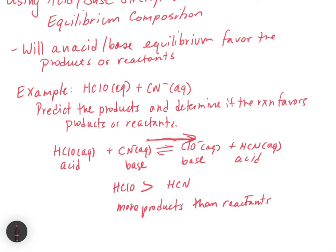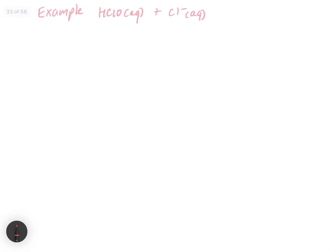That's how you can tell, first, what the products are going to be, and second, whether the reaction favors products or reactants at equilibrium. Now let's take a look at a second example, where we have HClO aqueous plus Cl⁻ aqueous. We go back to our chart to discover which is our strongest acid and which is our strongest base, and remember, we always have water present, so that's another thing we have to check.